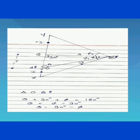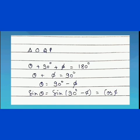First, we find the value of sin θ. In right-angle triangle OQP, the angle sum gives θ + φ + 90° = 180°, so θ + φ = 90°, therefore θ = 90° − φ. Substituting into sin θ: sin θ = sin(90° − φ) = cos φ. So sin θ equals cos φ.